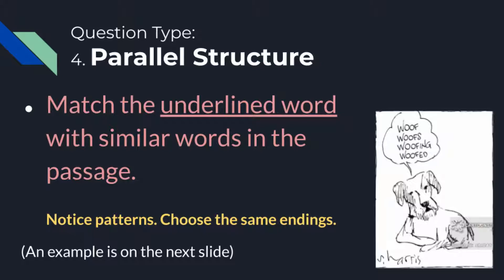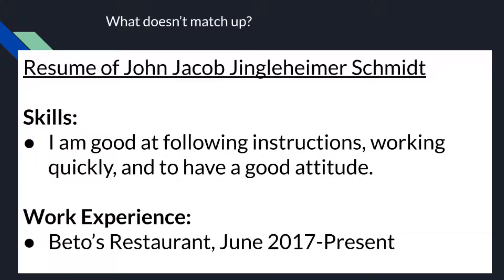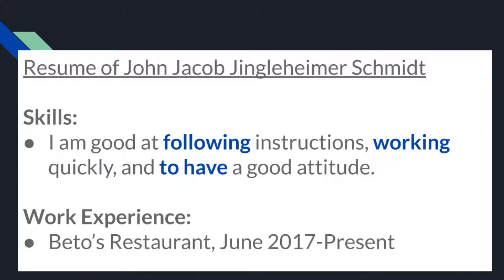Here's an example of that. Imagine you are a boss and you're looking at the resume of an employee, trying to decide if you want to hire them. In his skills section he says: I am good at following instructions, working quickly, and to have a good attitude. Some of you hear that and you're like, yeah, okay. But some of you hear that and your sixth sense kicks in — you look at it and realize there's something wrong. So if we highlight the three verbs in this little skills section, you will see: following, working, and to have. One of those things is not like the other.